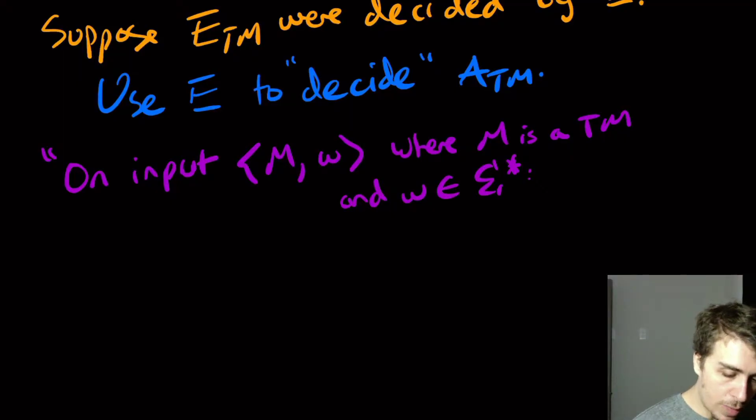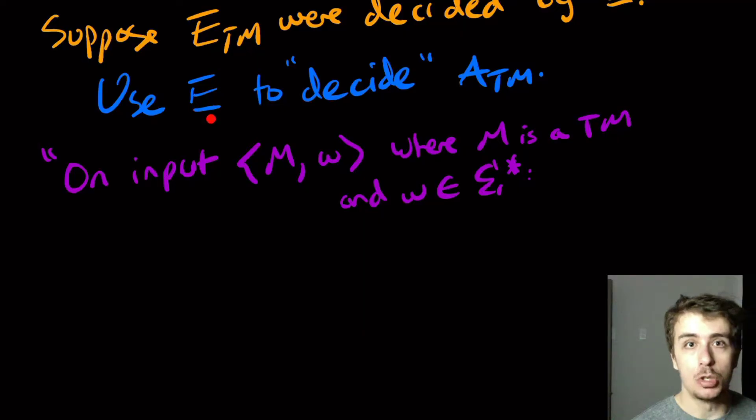Then what we can do is, well, we could feed this machine M into E. We could do that because E takes any Turing machine, figures out whether its language is empty, supposedly. But I claim that that doesn't help us very much because we're trying to answer the question of whether M accepts W specifically. But if we find out that M's language is empty, well, that immediately tells us it doesn't accept W. It doesn't accept anything.